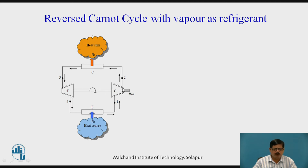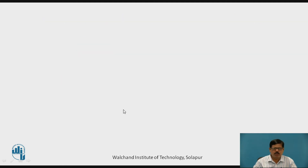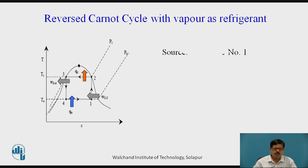There are four processes associated with these four devices: one to two — isentropic compression; two to three — isothermal heat rejection in the condenser; three to four — isentropic expansion; and four to one — isothermal heat absorption.